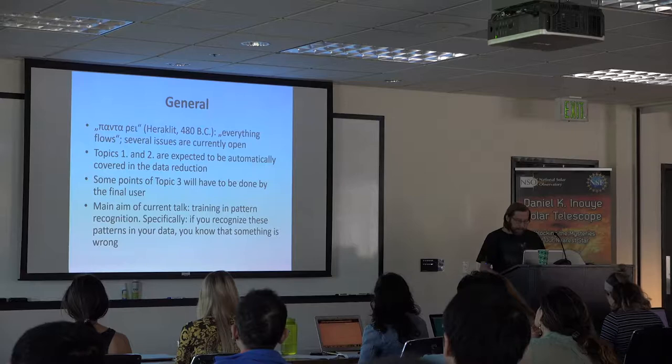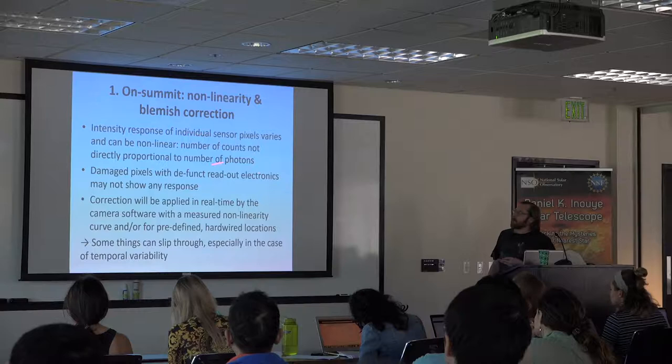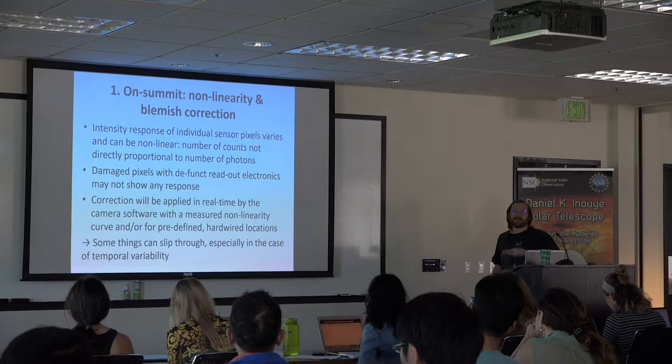What will be done at the telescope in real time? There will be two corrections. One of them is the non-linearity correction for the CCD pixel. The non-linearity of a CCD or sensor means the number of counts is not directly proportional to the number of photons that you receive. If you double the number of photons you might not get double the number of counts, and that is something you have to correct in each and every image.